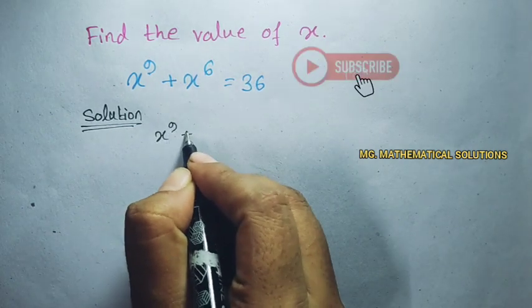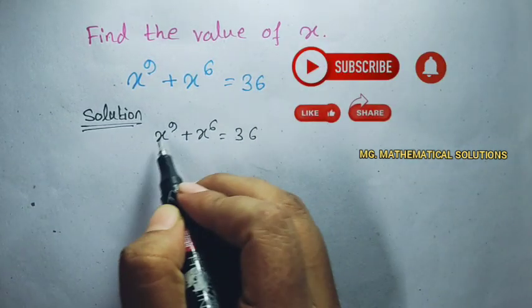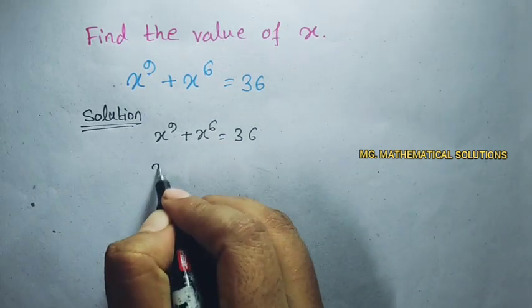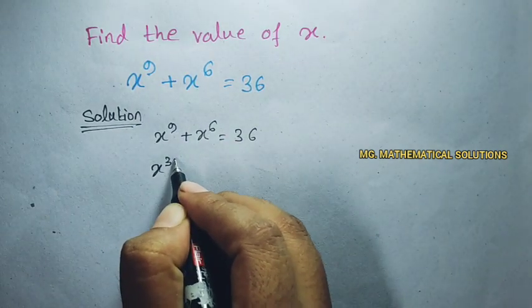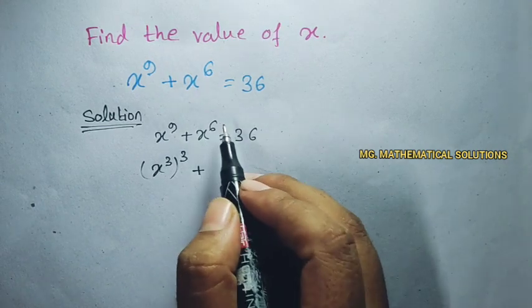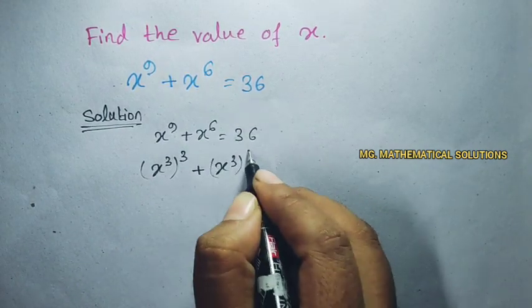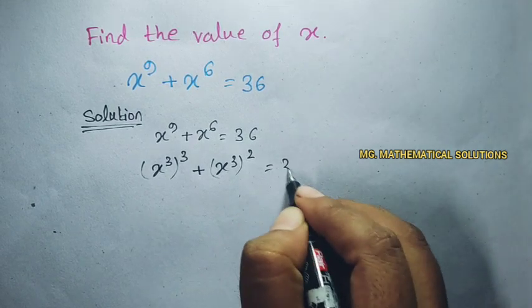x to the power 9 plus x to the power 6 equal to 36. x to the power 9 we can write as x cube whole to the power 3 plus x to the power 6 we can write as x cube whole to the power 2 equal to 36.